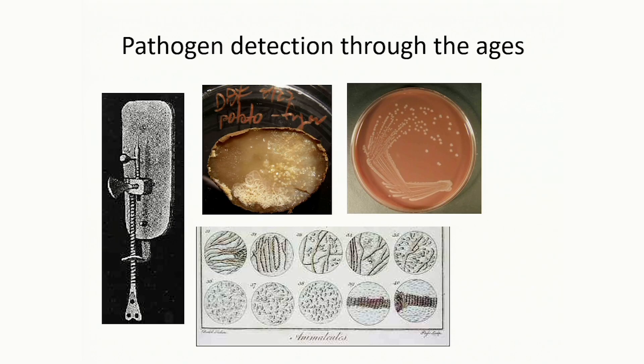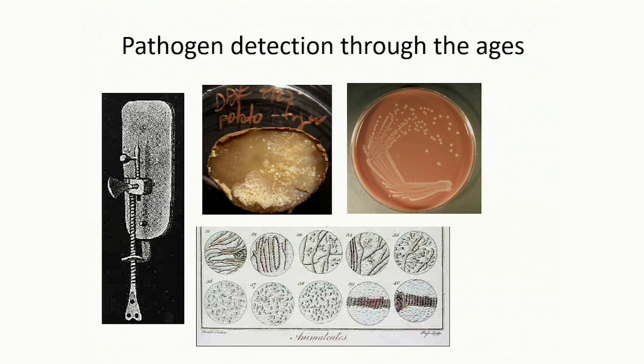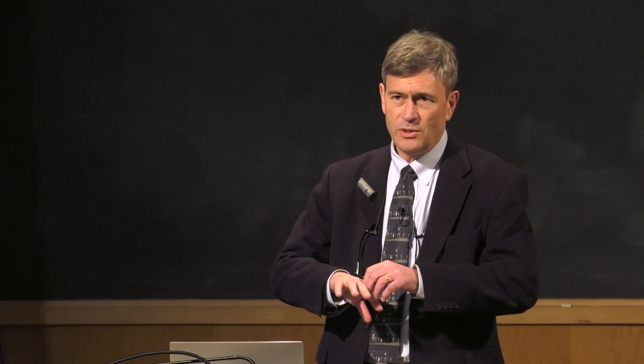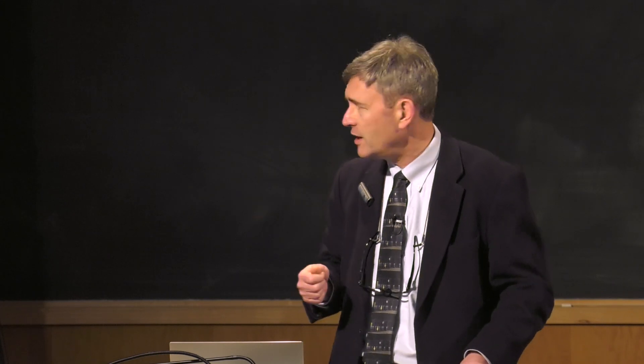Does anyone know what van Leeuwenhoek did for a living? He was not a microbiologist — he was a textile guy who made drapes. He felt he was getting ripped off on his fabric, that the thread counts weren't up to snuff. He was an amateur glass blower, so he made this little device with a tiny molten spot of glass. If he held his eye close enough to it, he got a simple microscope. What he found was not thread count — he drew pictures of things he called 'animalcules,' which looked a lot like fungi, and he could also see hints of bacteria. This whole new kingdom had opened up because of this silly little device.